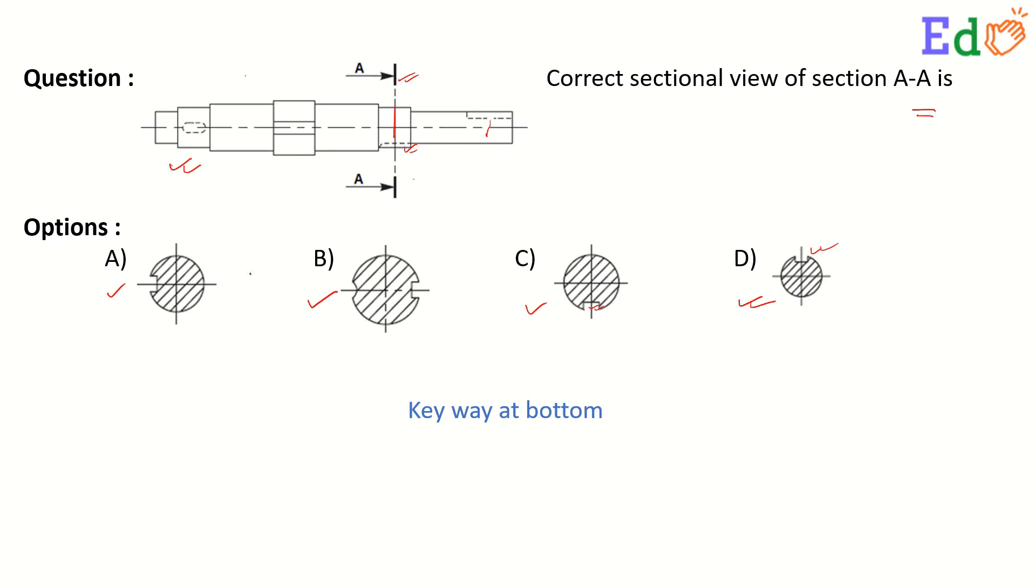And for the sideways, we get this A and B. These views for this section A-A, we get the actual view C where the keyway is at bottom. So option C is correct.